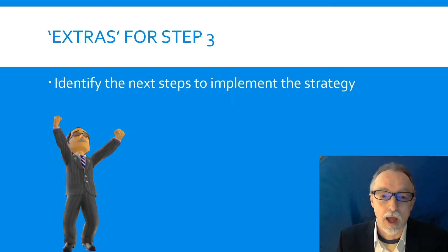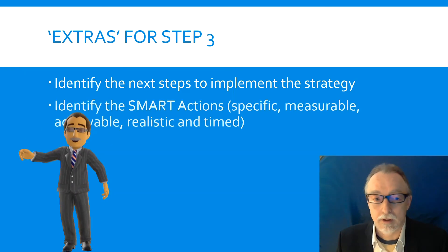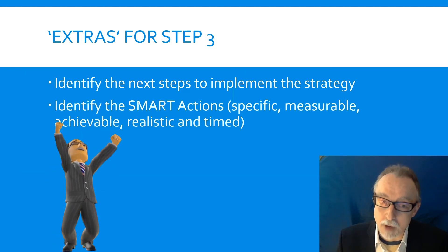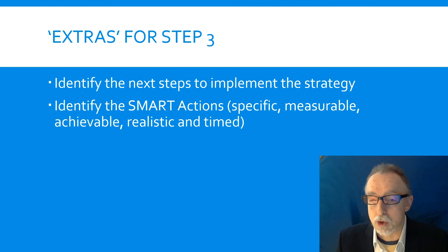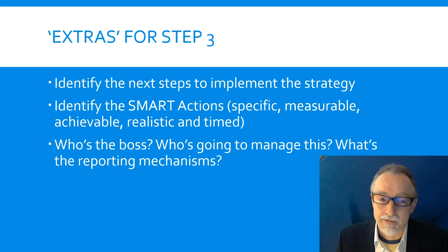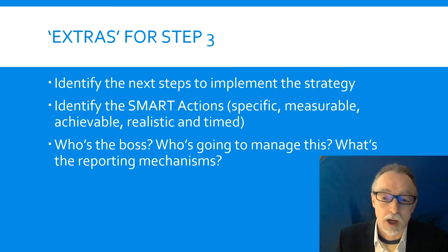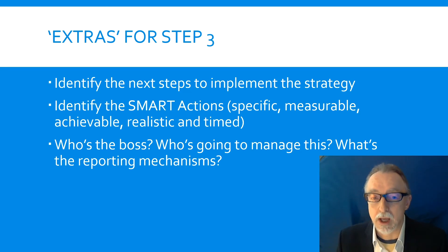A couple of extras for step three. Identify the next steps to implement your strategy. You need to identify the SMART actions that need to be taken in order to implement — in other words, specific, measurable, achievable, realistic, and timely actions. And then finally, you've got to identify who is the boss here. Who is going to manage this process? Who is in charge? Who is going to be doing what and reporting to whom? In other words, what are the reporting mechanisms?